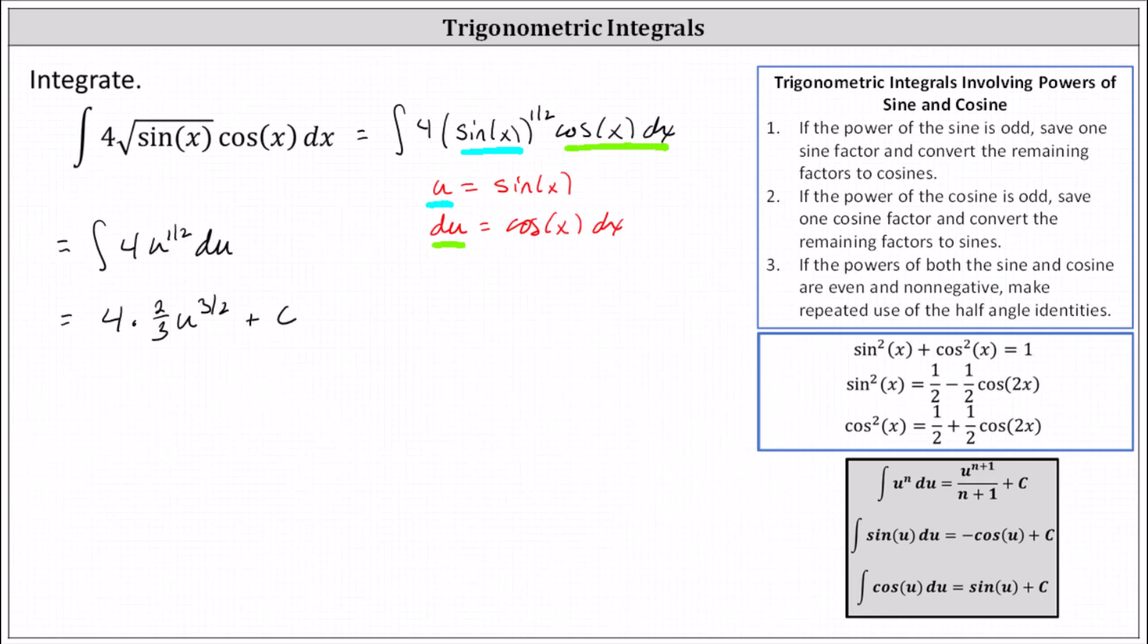And now we write the antiderivative back in terms of x by substituting sine x for u. So we have 8 thirds times sine x raised to the power of 3 halves plus c.